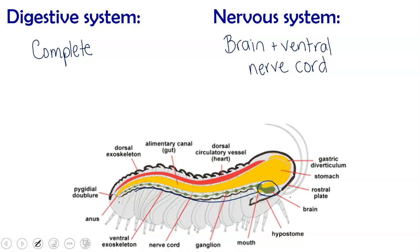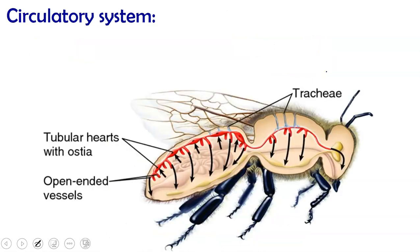For their circulatory system, it is open — meaning there is a series of hearts with vessels, and the heart pumps blood into the body cavity. In insects this fluid is actually called hemolymph. The hemolymph washes over the organs and then comes back into the heart to be pumped out again.